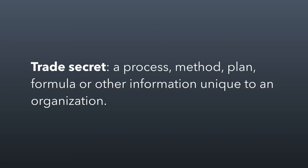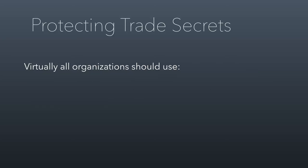One is what's called a trade secret. This is anytime you have a process, method, plan, formula, or some other information unique to your organization. In the case of a nonprofit, the most obvious example is your list of donors — knowing how much they gave, their contact information, the nature of your relationship with them. Every nonprofit should protect that as a trade secret. What's critical is that you actually keep them secret. Make sure everybody who gets access signs non-disclosure agreements so they are forbidden by law from misusing your trade secrets.